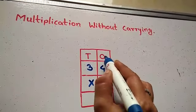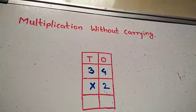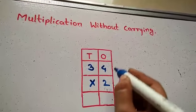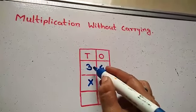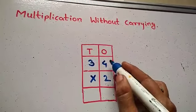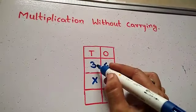So first, tens on top. So we will multiply 2 into 4 first, then 2 into 3. Now first, ones ko multiply karenge, then tens ko multiply karenge.